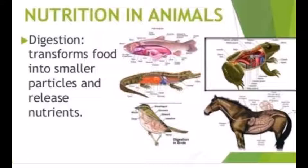Heterotrophic nutrition is a type of nutrition where an organism cannot make their own food from simple inorganic materials — they depend on other food sources. This type of nutrition is divided into three types.